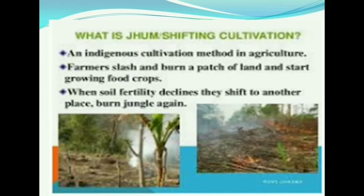Another type of subsistence farming is called shifting cultivation, also known as slash and burn, or jhuming. This is a recognized type of subsistence farming.